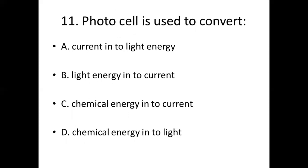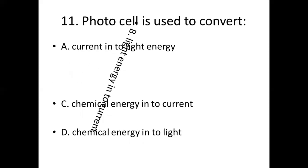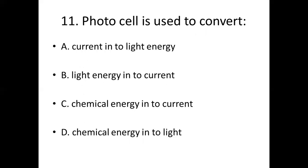Eleventh bit. A photo cell is used to convert: Option A, current into light energy. Option B, light energy into current. Option C, chemical energy into current. Option D, chemical energy into light. Answer: Option B, light energy into current.